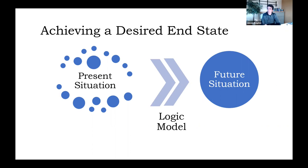With our terms defined, we're going to briefly walk through how a program fits into this whole scheme of solving problems. On the left side of our diagram, we can see the present situation — this is the world as it exists today. On the right-hand side, we're looking at the future situation — the things we want the world to be as a result of our activities. And in the middle is our logic model, our program strategy that's going to bring us from the present situation to the future situation we've envisioned.